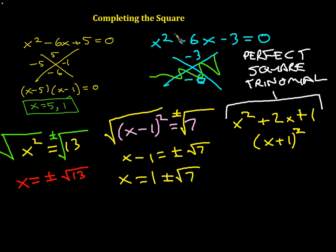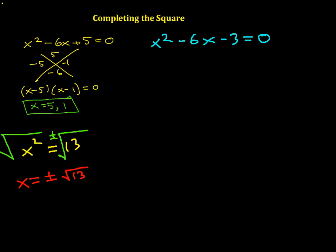Alright, so let's get back to our x squared minus 6x minus 3 and see what we can do. With this guy, it'd be so nice if we didn't have this minus 3 here. So I'm going to move it to the other side. I'm going to take that negative 3, add 3 to both sides, so I get 3 over here. And where the negative 3 was, I'm going to put in a little placeholder. I'm going to say plus whatever. I'm leaving room for something.